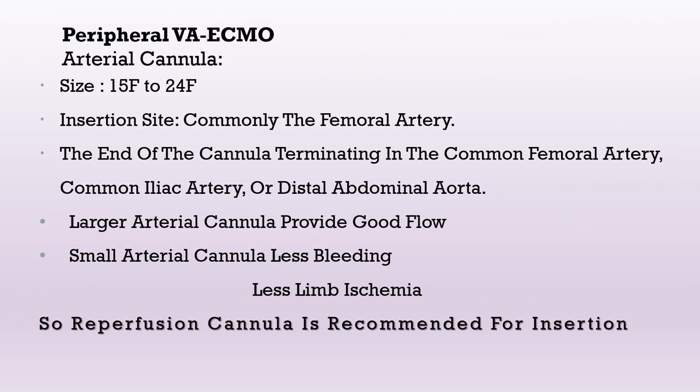The second part in peripheral VA ECMO is the arterial or return cannula. The size of the cannula ranges from 15 to 24 French. The insertion site is commonly the femoral artery, and the tip can be positioned in the common femoral artery, common iliac, or distal abdominal aorta. A larger arterial cannula provides better flow but leads to more limb ischemia, while a smaller arterial cannula causes less bleeding and less limb ischemia but may have problems with flow.